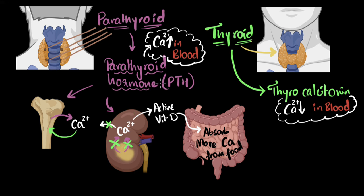So in summary: if calcium in the blood has reduced, PTH gets secreted a lot and thyrocalcitonin will not get secreted. As a result, calcium from the bones goes into the bloodstream, calcium from the urine gets reabsorbed back into the bloodstream, and more calcium is absorbed from food. And if calcium levels are high in the blood, PTH will not get released, and thyrocalcitonin levels will increase. It ensures calcium from the blood goes back into the bone and that no reabsorption of calcium happens from the urine in the kidneys. Sometimes I just can't believe that we evolved from a unicellular being into such complex, complex systems.